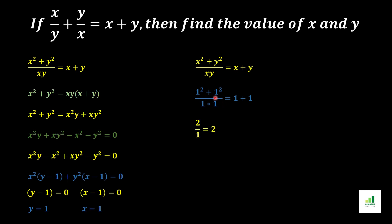With x equals 1 and y equals 1, we get 1 squared plus 1 squared over 1 times 1, which equals 2 over 1, equal to 2. On the right side, 1 plus 1 equals 2. So we can see that the left side equals the right side — 2 equals 2 — confirming that x equals 1 and y equals 1 is the correct answer.